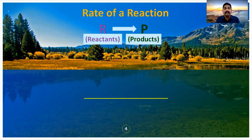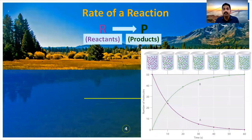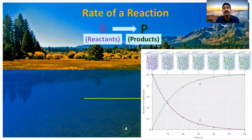At the beginning, we have only reactant molecules — the color is purple. As time proceeds, the purple-colored molecules are slowly converted into green color, which means the reactant molecules are being converted into product molecules. As time goes on, the concentration of reactants decreases and the concentration of products increases.